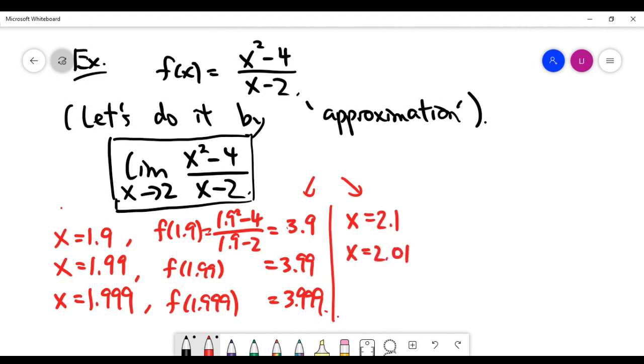You can choose 2.1. The next value is 2.01. The next value is 2.001. And similarly, you can compute the values of f depending on the value you choose.